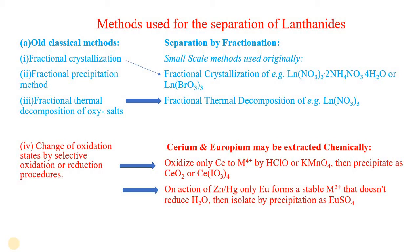The fractional precipitation method follows the principle that different substances form precipitates with different Ksp values. On the basis of this solubility difference — the constant of solubility product Ksp — different components present in a mixture are precipitated one by one and can be separated.